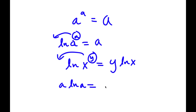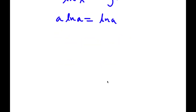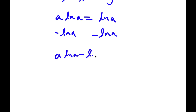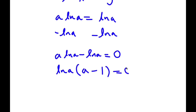Which is equal to ln a, because I took ln on both sides. Now I'm going to subtract ln a from both sides, so now I have a times ln a minus ln a is equal to zero.